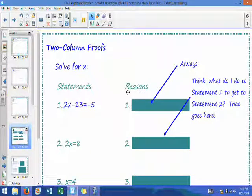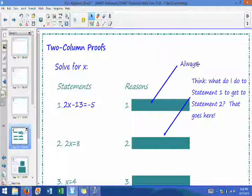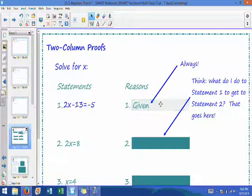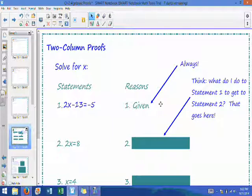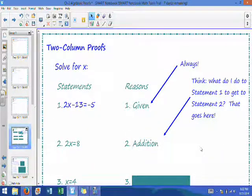Okay, now there's a couple rules when it comes to filling out this reasons column. The first rule, always, always, always, is given. Okay, you are just given a problem. Okay, you don't have to think about it all, you just write the problem down. So, number one thing is always, always, always given. Now, this is where it starts to feel tricky. You want to actually look at statement 1, and how did that become statement 2? Well, we said that what we did is we added 13 to both sides. So, what we did is we did addition.